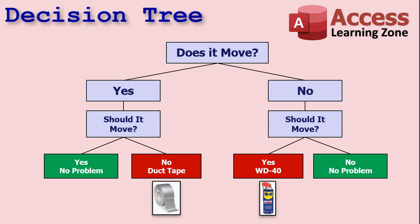This is one of my favorite decision trees. Does it move? Yes — should it move? Yes: no problem. No: get duct tape. Does it move? No — should it move? Yeah: get WD-40. No: no problem. Again, simple decision tree.